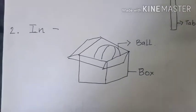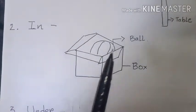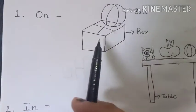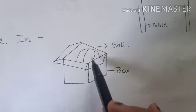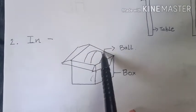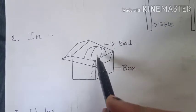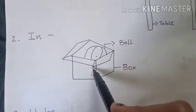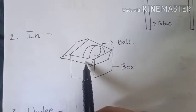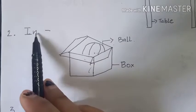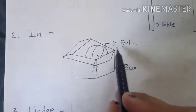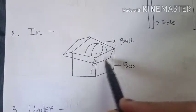Now, the word 'in'. In ka matlab hai andar. We saw the ball was on the box — box ke oopar tha. Now the ball is in the box — box ke andar chala gaya. The ball is inside the box. Jabb bhi kuch saman kisi ke andar hota hai, we use 'in'. The ball is in the box.